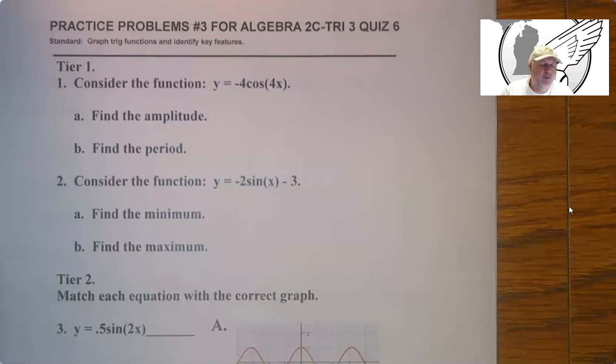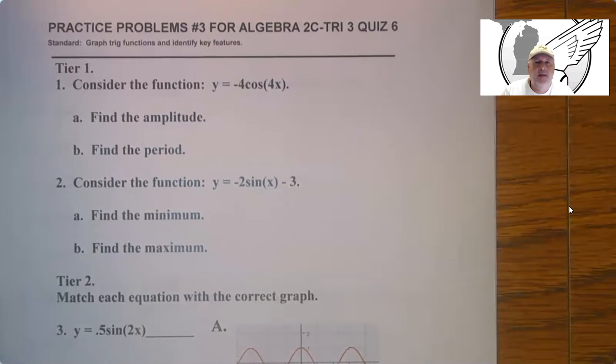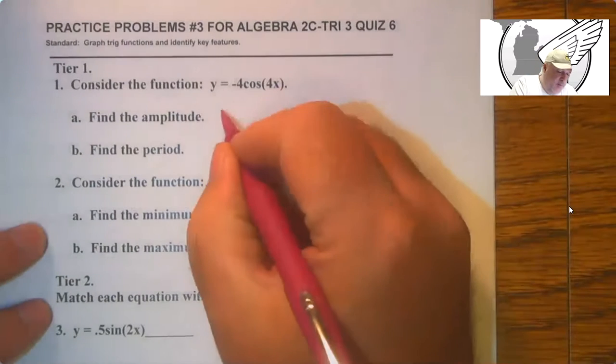This is practice quiz 3 for quiz 6 in the third trimester of Algebra 2. So the amplitude is the absolute value of A, which is going to be 4.